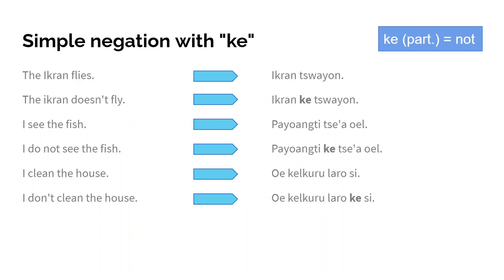Since 'laro si' is the verb meaning 'to clean' — if you watched part 3 about the 'si' verbs, you may know that in si-verbs the 'si' actually is the verb part, while the thing before the 'si' is usually a noun or adjective. In this case 'laro si' is built from 'laro,' which is the adjective 'clean,' and 'si,' which turns it into a verb. Since 'si' is the verb part, the negation particle 'ke' goes before the 'si' and not before 'laro.' This happens with all si-verbs.